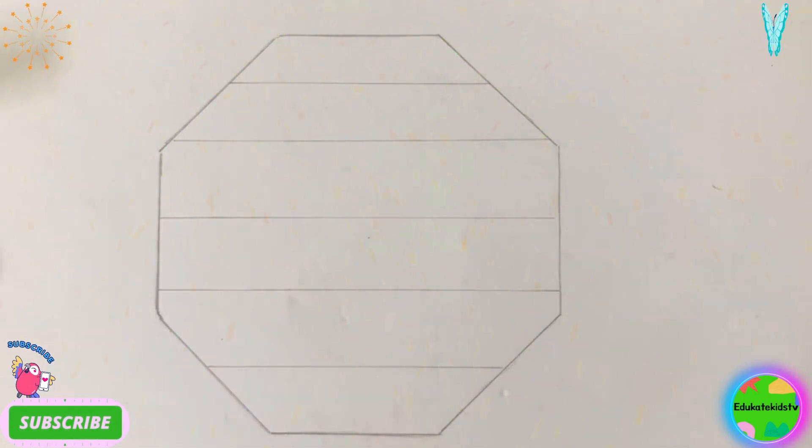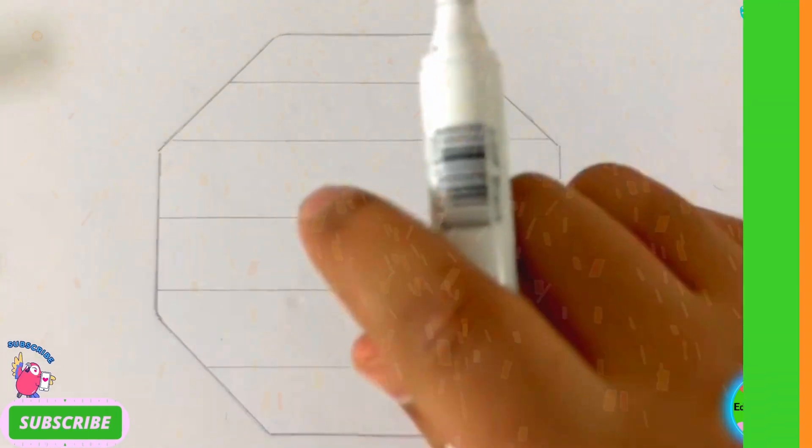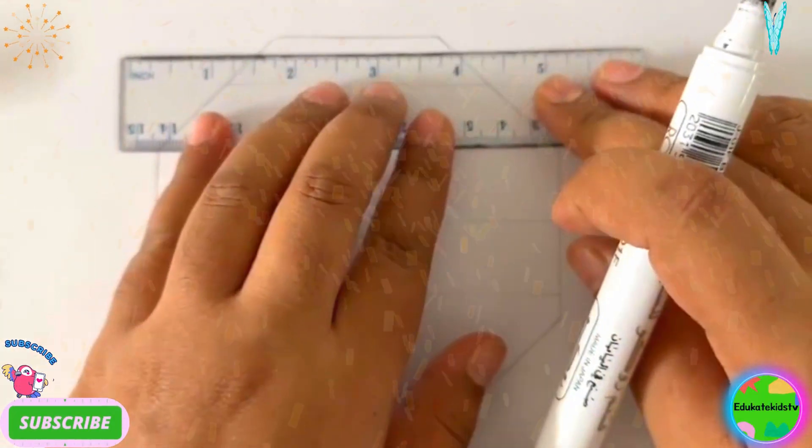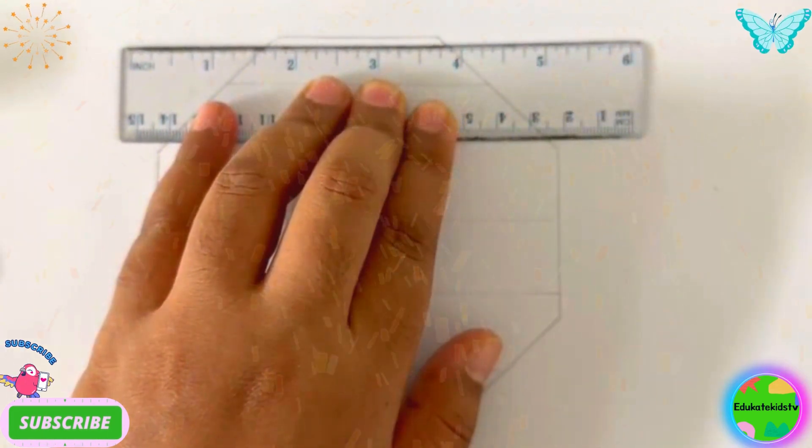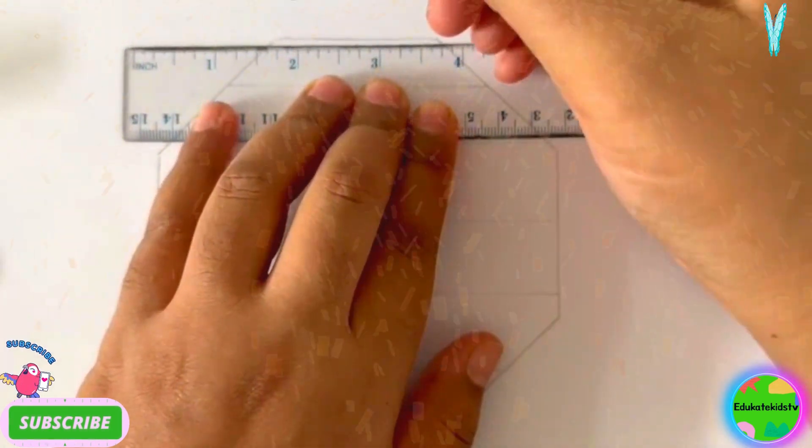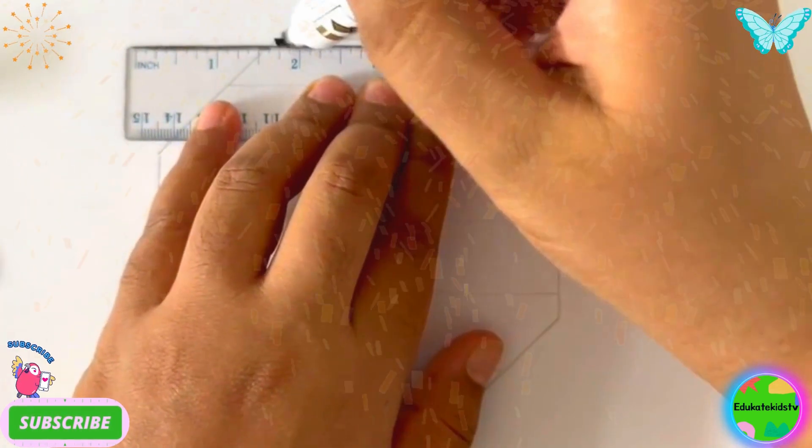And now we will draw with our black marker. We will draw it and draw circles inside it, okay? So that we can make a puppet of it. Okay dear, so let's start.